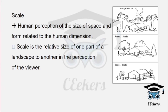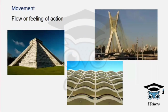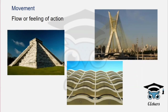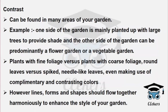Movement refers to the flow or feeling of action. Using inclined angles, linear elements, cables, and curves creates a sense of movement and action in architecture — giving a feeling of motion in the image.